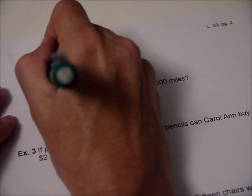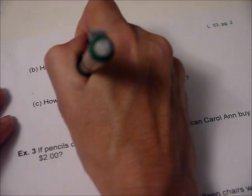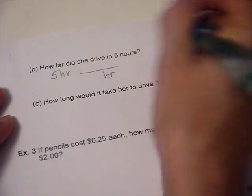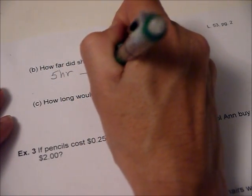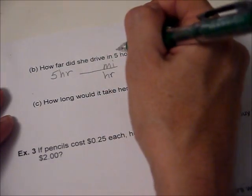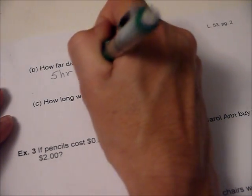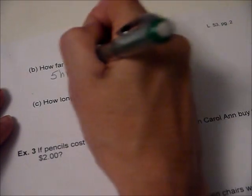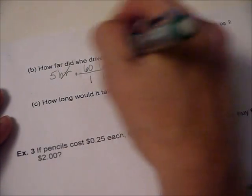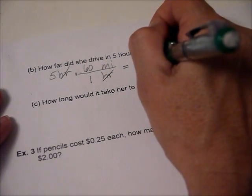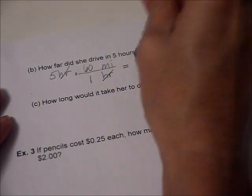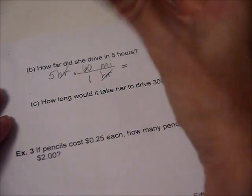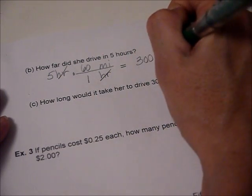How far did she drive in five hours? Well, we're going to write five hours, use the rate where we can get rid of hours. So we would use that, right? And our hours cancel out. Now we get...sorry, I don't know what I got, not 100, 300 miles.